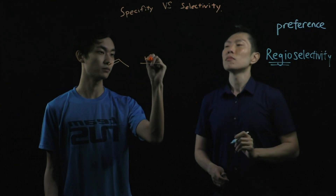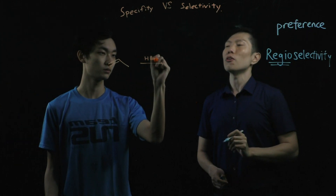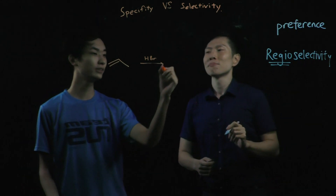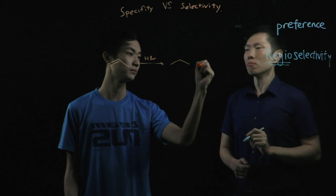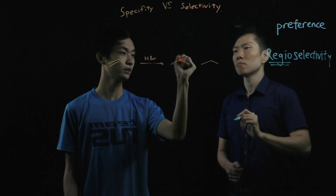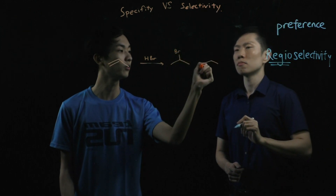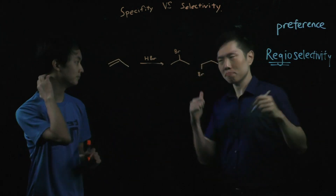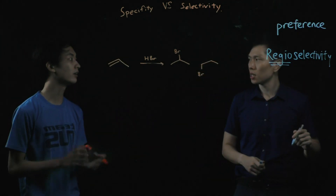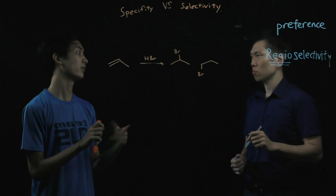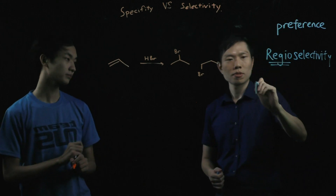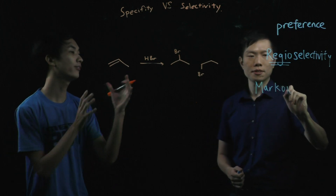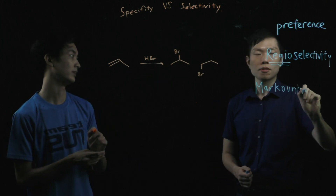We do a reaction with HBr — that's a hydrohalogenation. In reality, we can get two products: one here and one here — a terminal bromide and the middle bromide. But we know that because this reaction follows Markovnikov's rule, the more favoured product is the more substituted one.